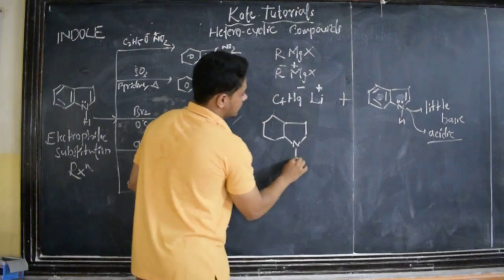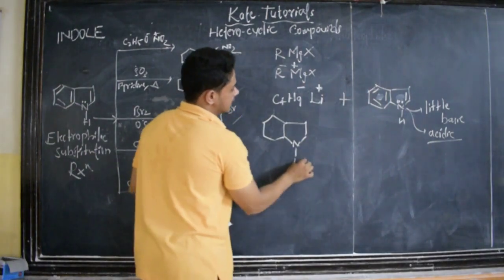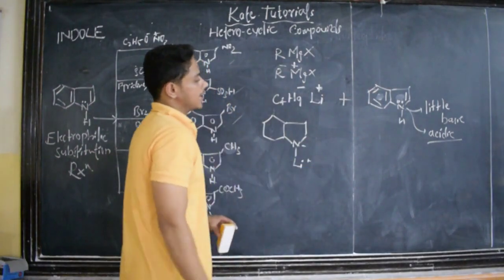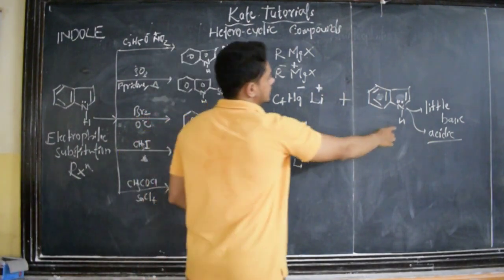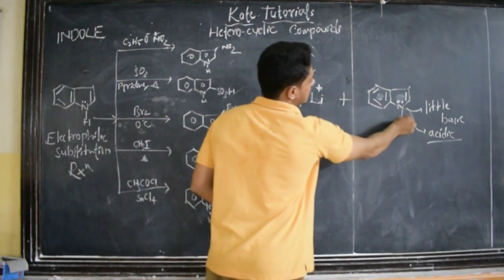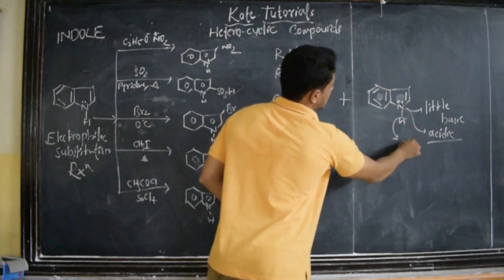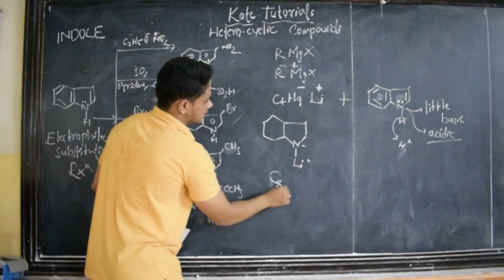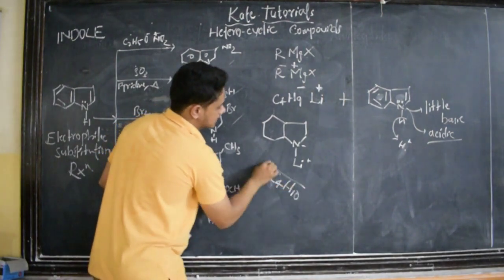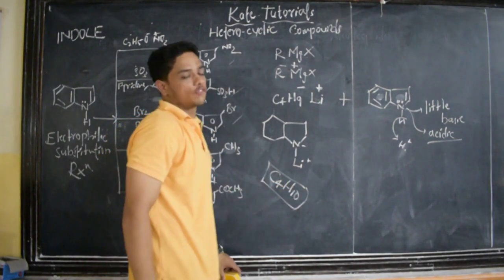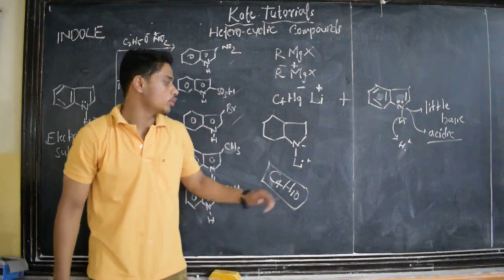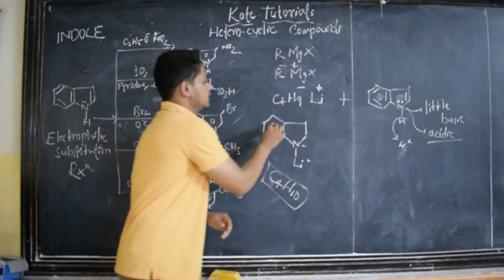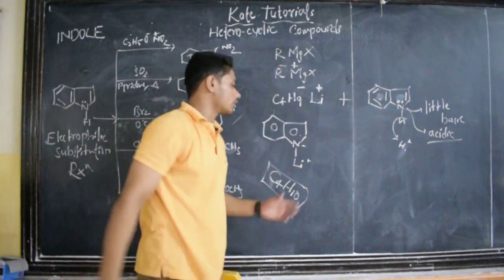When these compounds react with such compounds, the product will be: here we get lithium, Li+ and N- lithium. And this hydrogen, since it acts as acid, gives this H+ ion. This H+ ion reacts with this to form C4H10. This is n-butane. This is our compound, what we got, indole.